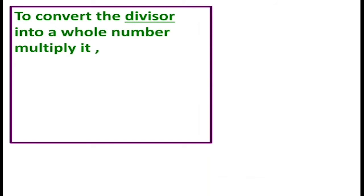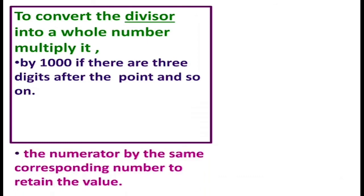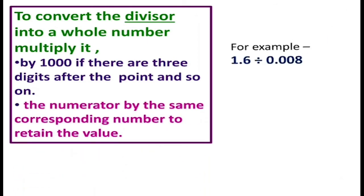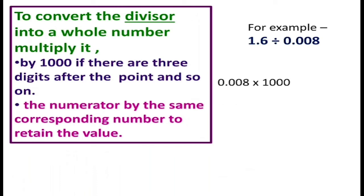When there are 3 digits after the decimal point in the divisor, you have to multiply both the numerator and denominator by 1000, and so on. Here I have taken an example where 1.6 is divided by 0.008. The divisor 0.008 has 3 digits after the decimal point, so multiply both the divisor and numerator by 1000. When you multiply 1.6 by 1000 you get 1600, and when 0.008 is multiplied by 1000 you get 8.